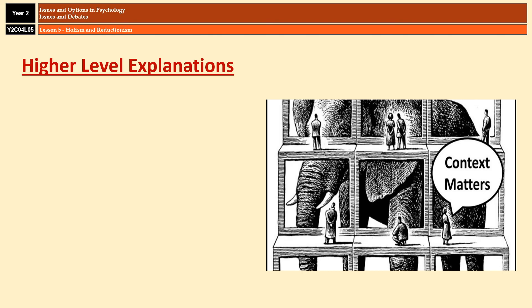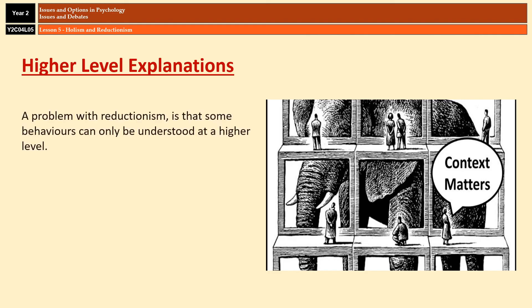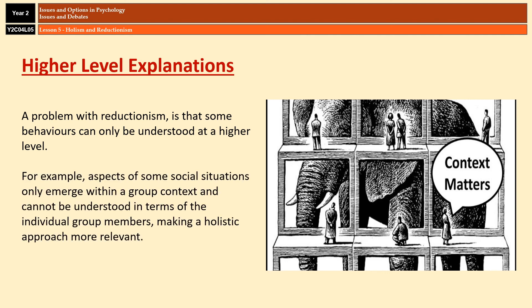Finally, many behaviours can only be understood at the higher level of explanation, so taking a reductionist approach would make absolutely no sense. For example, aspects of some social situations only emerge within a group context and can't be understood in terms of individual group members, as was the case with the Stanford prison study, where the interactions between individuals and the behaviour of the group were particularly important. Taking a reductionist approach in these instances wouldn't provide a valid account of the behaviour in question — there are situations where holism is the only way to go, and that is a limitation of reductionism.